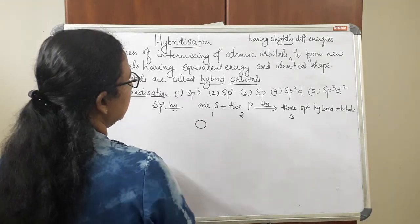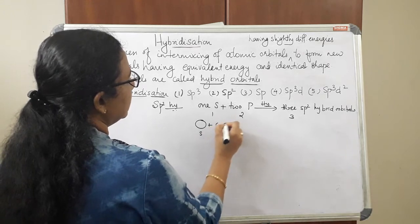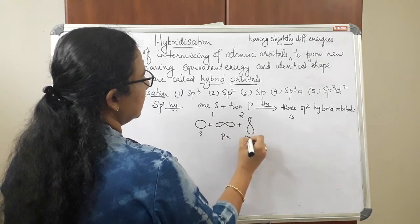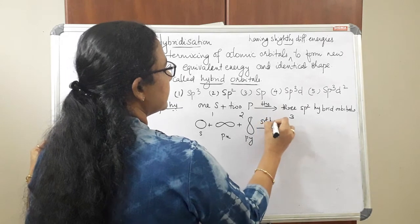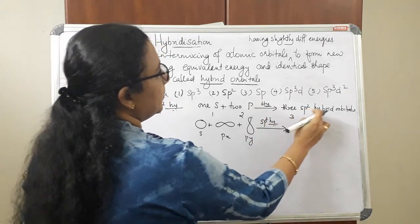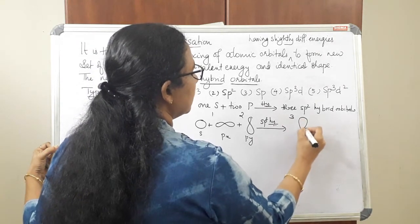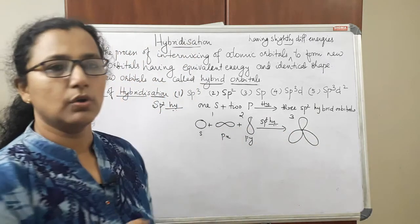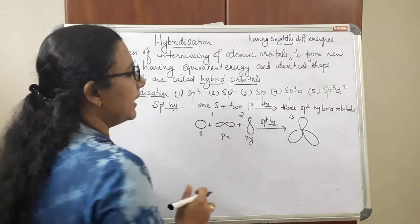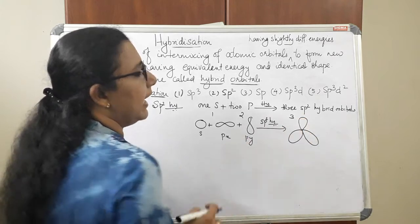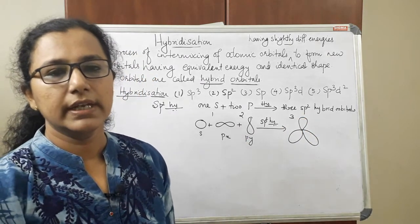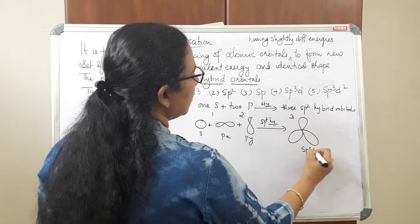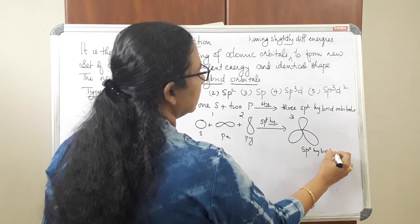The s orbital and the two p orbitals — px and py — can be represented diagrammatically. After sp2 hybridization, three sp2 hybrid orbitals are formed. These orbitals have equivalent energy and identical shape, as the new orbitals formed after intermixing of atomic orbitals will always share the same energy and shape.